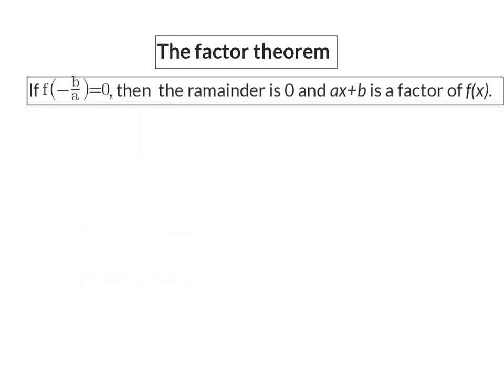The factor theorem. If f of minus b over a equals 0, then the remainder is 0, and ax plus b is a factor of the function.